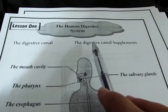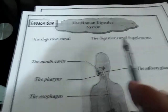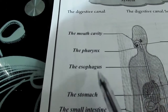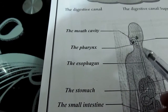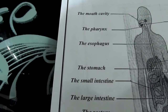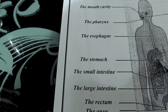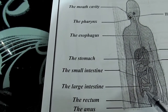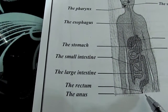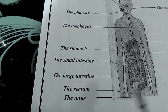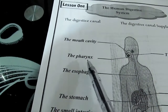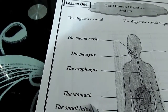The digestive canal contains the mouth cavity, pharynx, esophagus, stomach, small intestine, large intestine, rectum, and finally the anus.